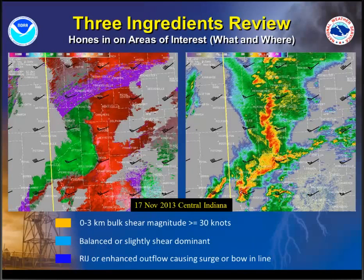A quick review for those who weren't on the call yesterday — the three ingredients method. We're looking for each ingredient to be co-located with each other. If you've got all three co-located, that's when you've got a strong chance, roughly about 80%, of mesovortex genesis and rapid intensification. This is going to be a case from November 2013 across central Indiana. You can see we've got a QLCS there. First we have to figure out where that updraft, downdraft, convergence zone is.